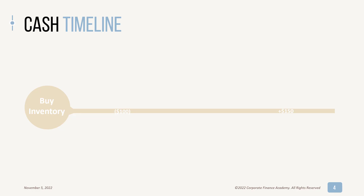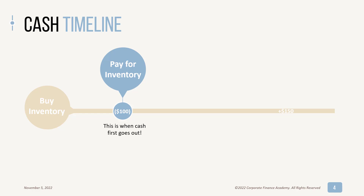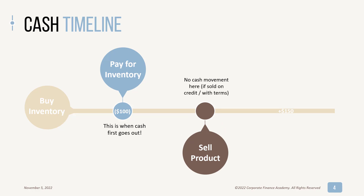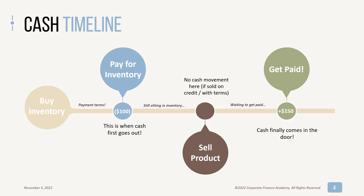Often in the business world, when you buy inventory, you don't pay for it yet. You're actually going to pay for it maybe 30 days later — 15, 45, it depends. And that is when the cash first goes out the door of the business. Then you're going to sell a product, and many times you don't actually collect cash when you sell it. You give them five days to pay, or 15, or 30, or longer. Then your cash finally comes in the door. So you have payment terms where you don't have to pay yet, then your product sits in inventory until you sell it, and then once you sell it you're waiting to get paid. That is how cash flows through a business.